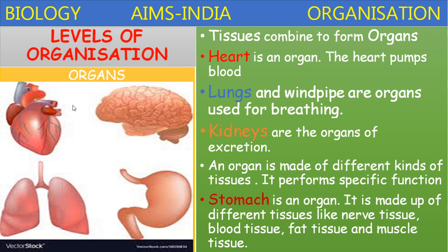Heart performs the pumping function; it is a muscular organ. Brain is made up of soft tissue and helps in the transmission of information. Lungs are made up of soft tissue and help in breathing. Stomach is a muscular organ that helps in digestion of food.